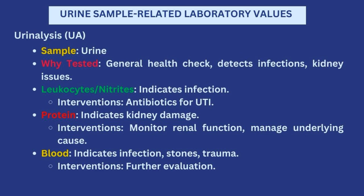If an infection is indicated, you would be expecting to treat it — either antibiotics for a UTI or whatever the infection may be. If protein is found in the urine, that indicates kidney damage, so you need to start monitoring renal function and manage any underlying cause. If blood is found in the urine, that also indicates an infection, or it could be because there are kidney stones, or trauma in the urinary system. You would need to further evaluate what is causing the blood and treat accordingly.